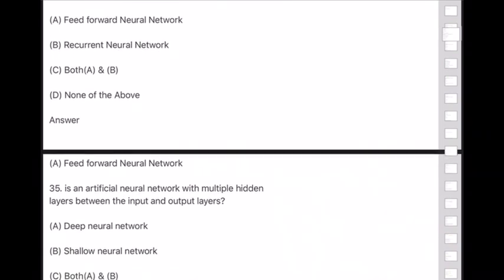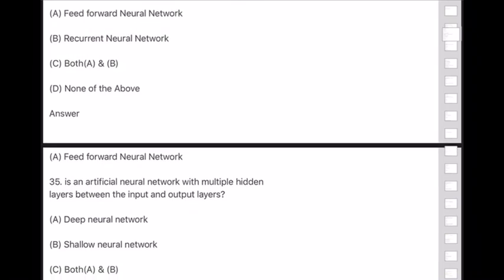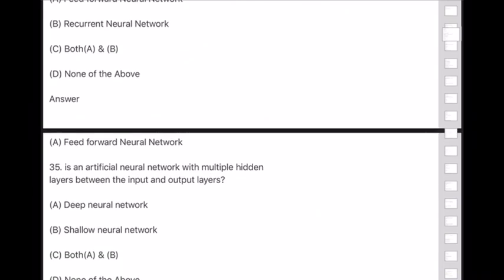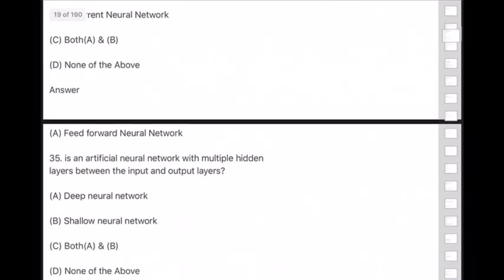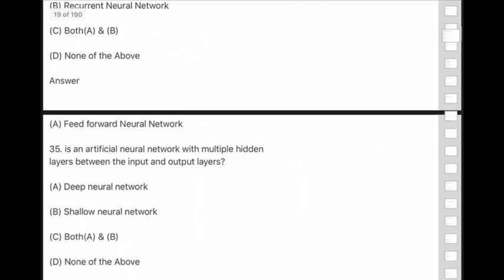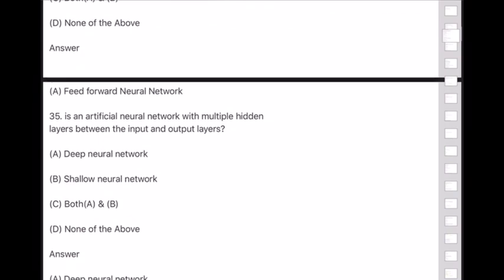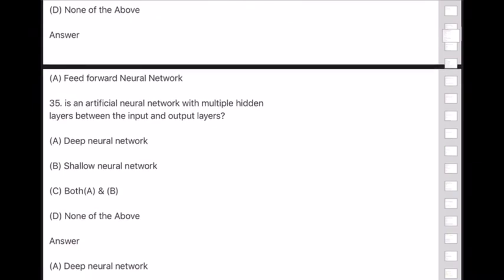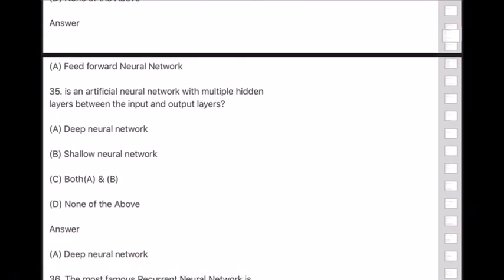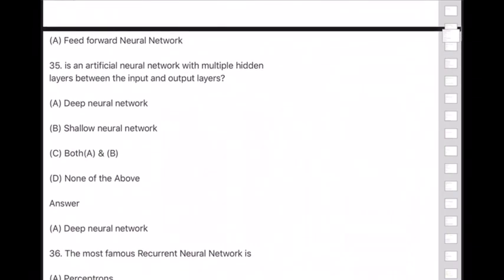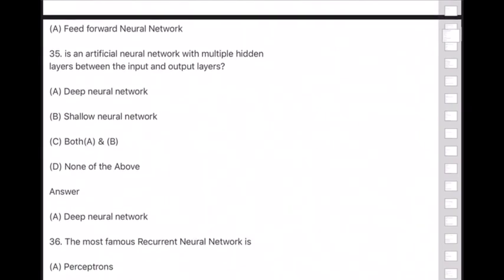Answer to question 35 is option A — deep neural network. Question 36: The most famous recurrent neural network is — answer is option C — Hopfield net. Please make a special note.